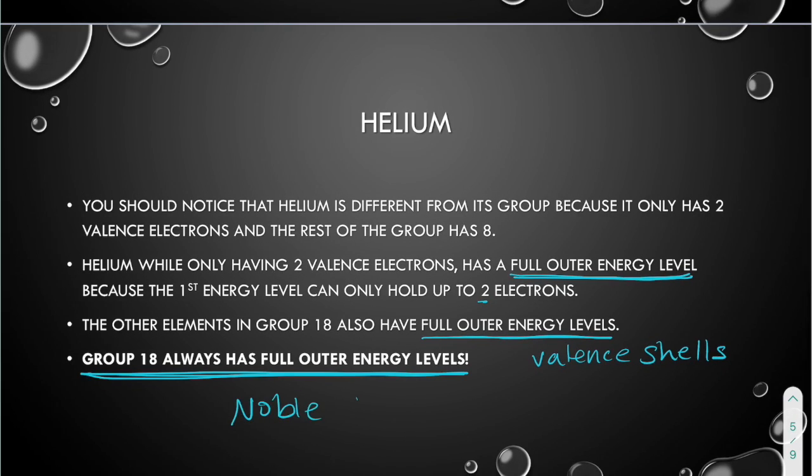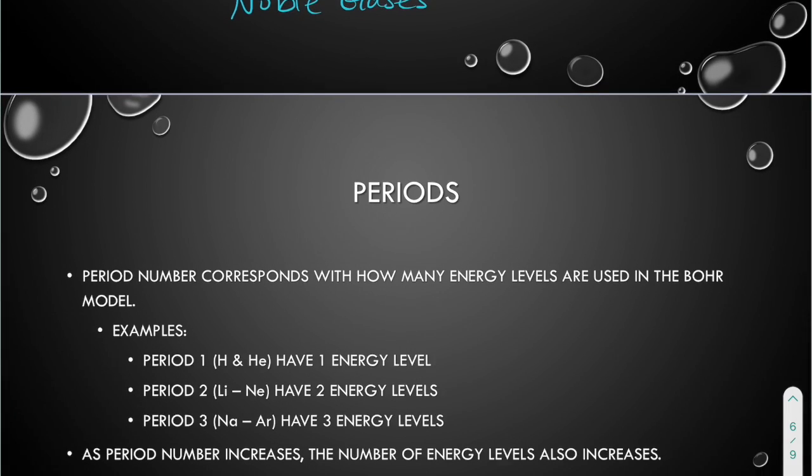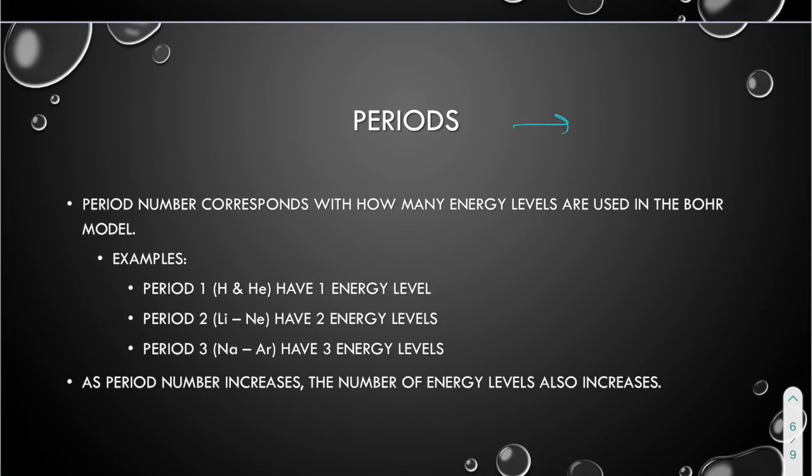The important part about group 18 and why helium goes with group 18 instead of group 2 is that group 18 always has full outer energy levels. Their valence electrons are full. So that actually makes them very special, and their name is the noble gases. We're going to do the family names in step 2. Certain groups have specific names, but yes, group 18 is called the noble gases. Periods, the period number corresponds with how many energy levels are used in the Bohr model. For example, period 1, which is hydrogen and helium, they only use one energy level and they're in period 1. Period 2 goes from lithium to neon. They use two energy levels and they're in the second period. As the period number increases, you are also increasing the number of energy levels.